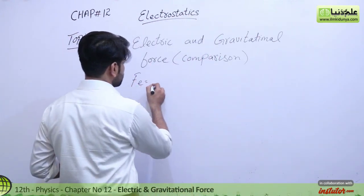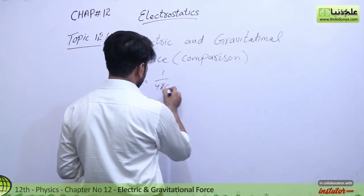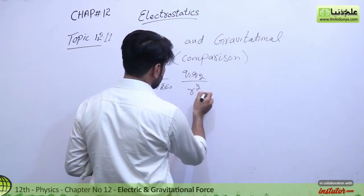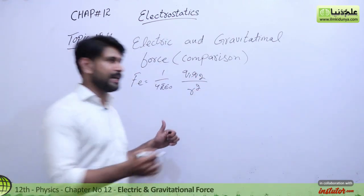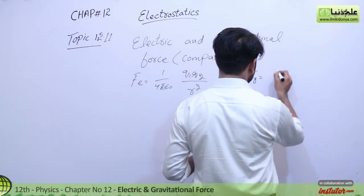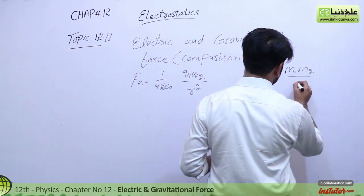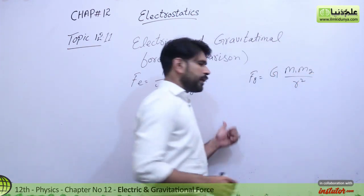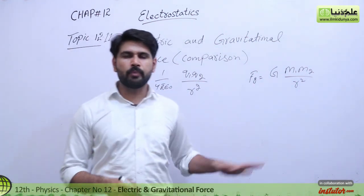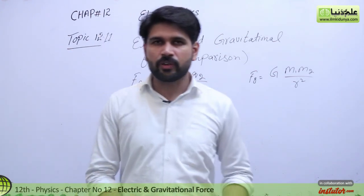The electrostatic force is equal to 1 over 4π ε₀ times q₁q₂ over r². The gravitational force is equal to G times m₁m₂ over r². Here is the comparison — both forces are alike in that both are conservative forces.